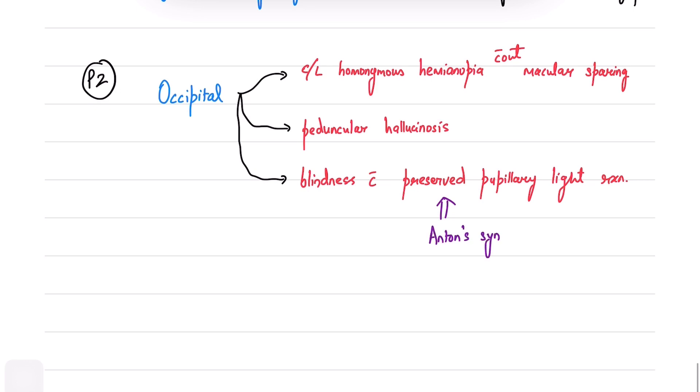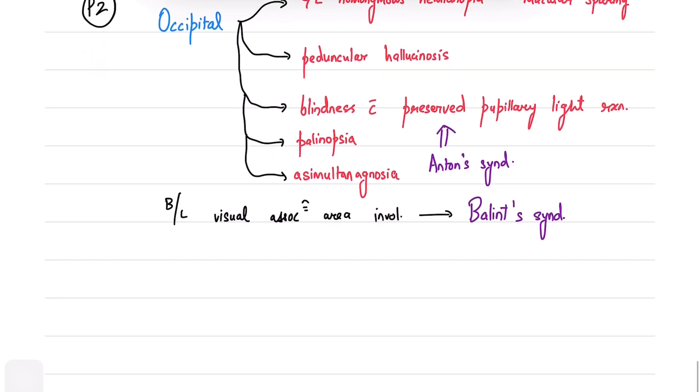Involvement of bilateral visual association area will result in Balint's syndrome. Patients will experience persistence of visual images for several minutes even after shifting to another image, which is known as palinopsia, or an inability to create the whole of an image, known as simultanagnosia.